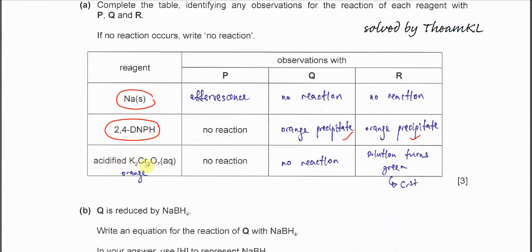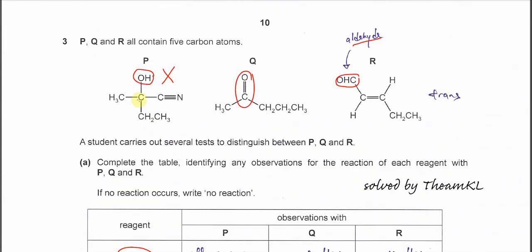Acidified potassium dichromate. So it's the orange solution, and this is an oxidizing agent. P, already told you, no reaction because this is tertiary alcohol.